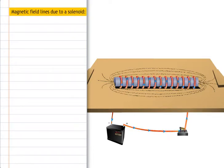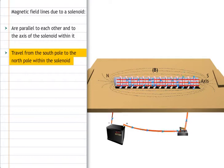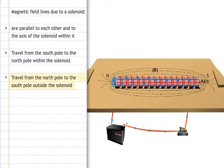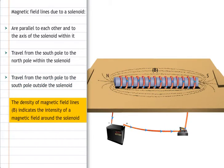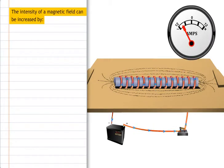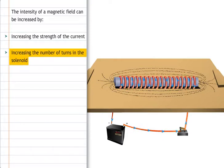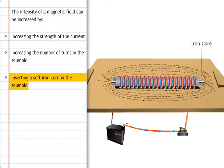Magnetic field lines due to a solenoid are parallel to each other and to the axis of the solenoid within it. They travel from the south pole to the north pole within the magnet and from the north pole to the south pole outside the magnet. The density of magnetic field lines indicates the intensity of a magnetic field, measured in newton per ampere meter or tesla. The intensity of a magnetic field can be increased by increasing the strength of the current, increasing the number of turns in the solenoid, or inserting a soft iron core in the solenoid.